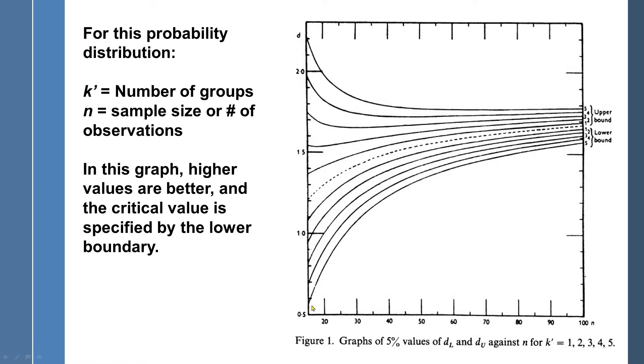So again, very low scores, it's significantly autocorrelated. Very high scores, it's not autocorrelated. And anything in between, you run the risk of having some issue with autocorrelation.